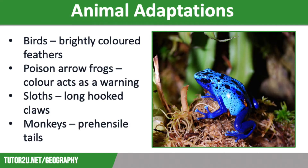Let's start by talking about birds, in particular species like parrots and toucans. These have brightly coloured feathers to attract mates, big, strong, razor-like beaks to crack open nuts, and long, sharp claws to grip swaying branches.